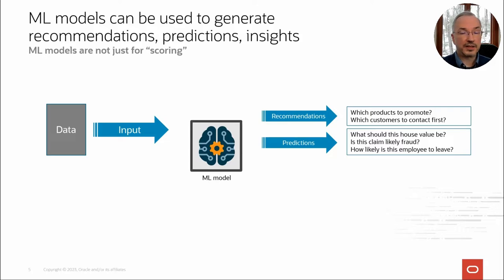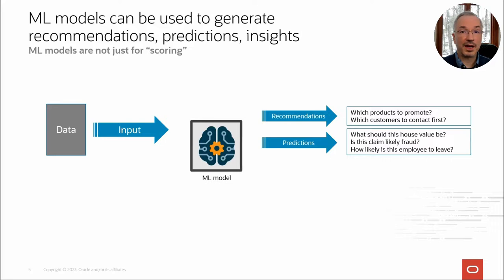Given a model, you can generate recommendations based on new data — for example, to indicate which products to promote to a given customer, or which customers you should contact first. You may want to do this interactively via dashboard for a call center rep interacting with a specific customer, or as a batch operation to provide a report on the top 1000 customers to contact for a marketing campaign.